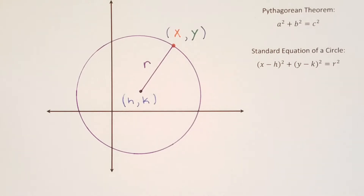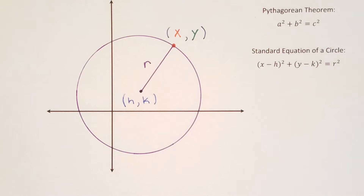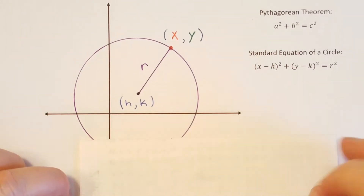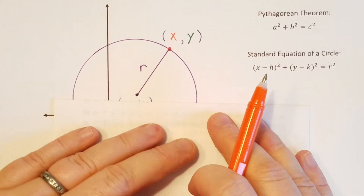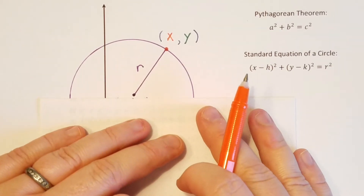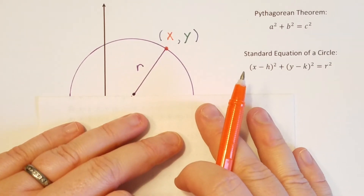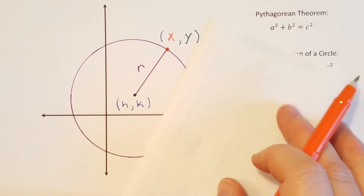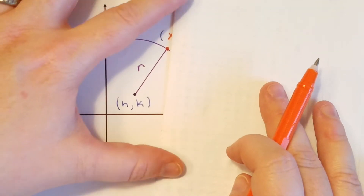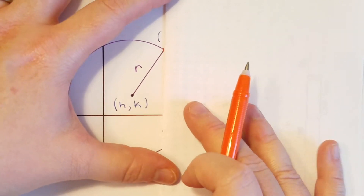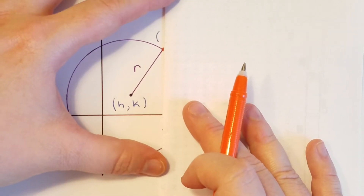So let's go ahead and construct our right triangle, because that's essentially how we find the distance between two points. So I'll do the vertical distance first, since I can see that more easily.